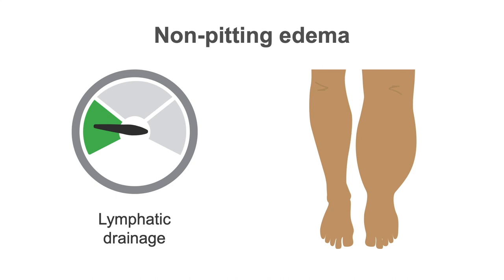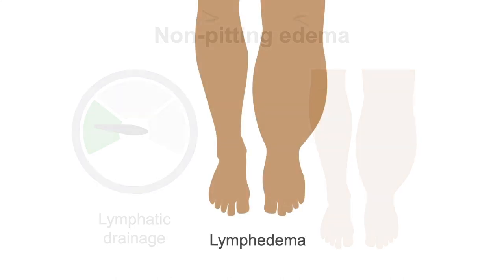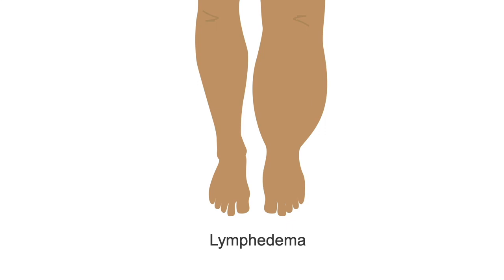Pitting edema can occur in the early stages of lymphedema, but it will eventually become chronic non-pitting edema because of the tissue fibrosis that develops. Lymphedema causes the skin to appear doughy, and it will not form pits when you apply pressure.